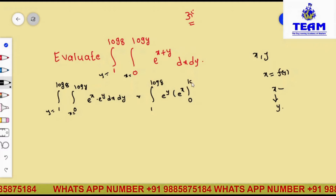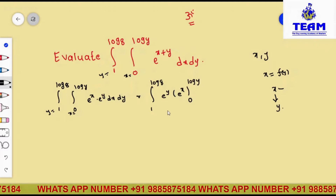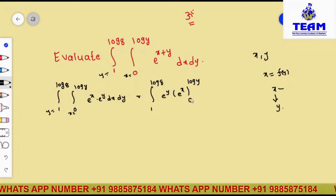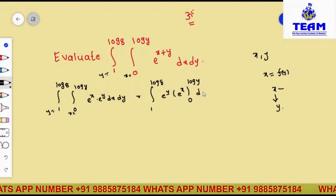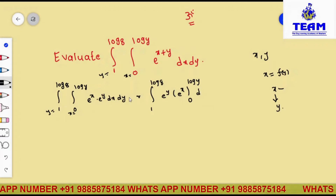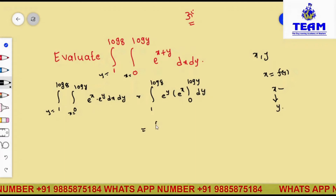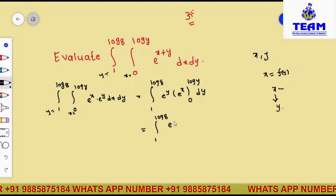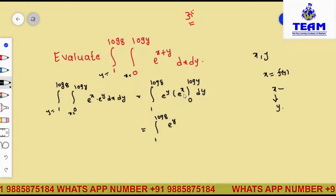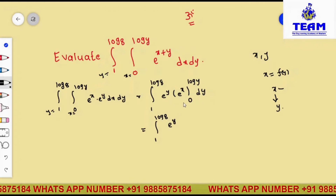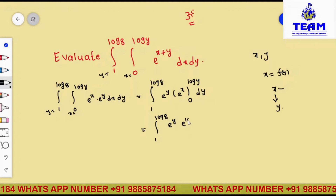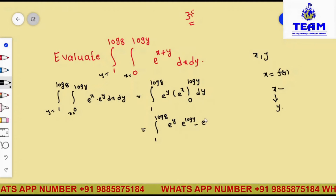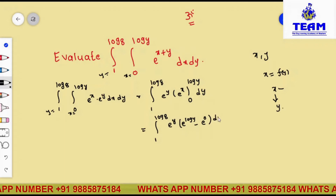Now applying the limits from 0 to log y — upper limit minus lower limit. Substituting the upper limit log y in place of x gives e to the power of log y. Substituting the lower limit 0 gives e to the power of 0. So we get: integral from 1 to log 8 of e to the power of y times (e to the power of log y minus e to the power of 0) dy.